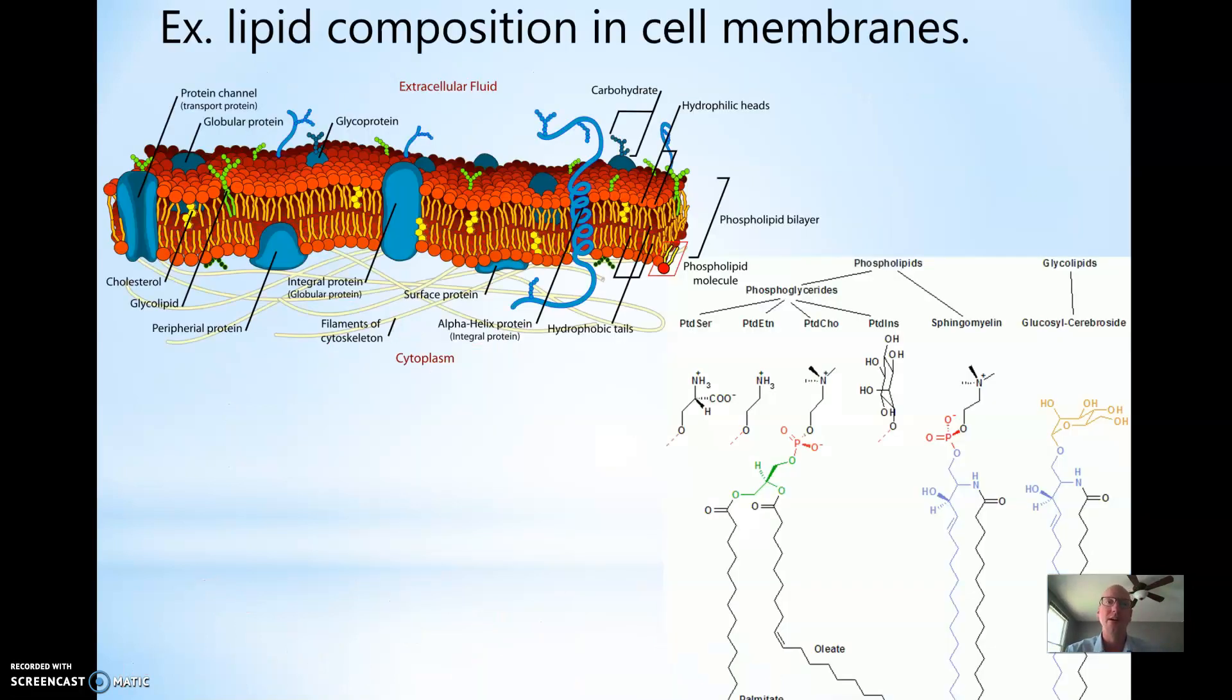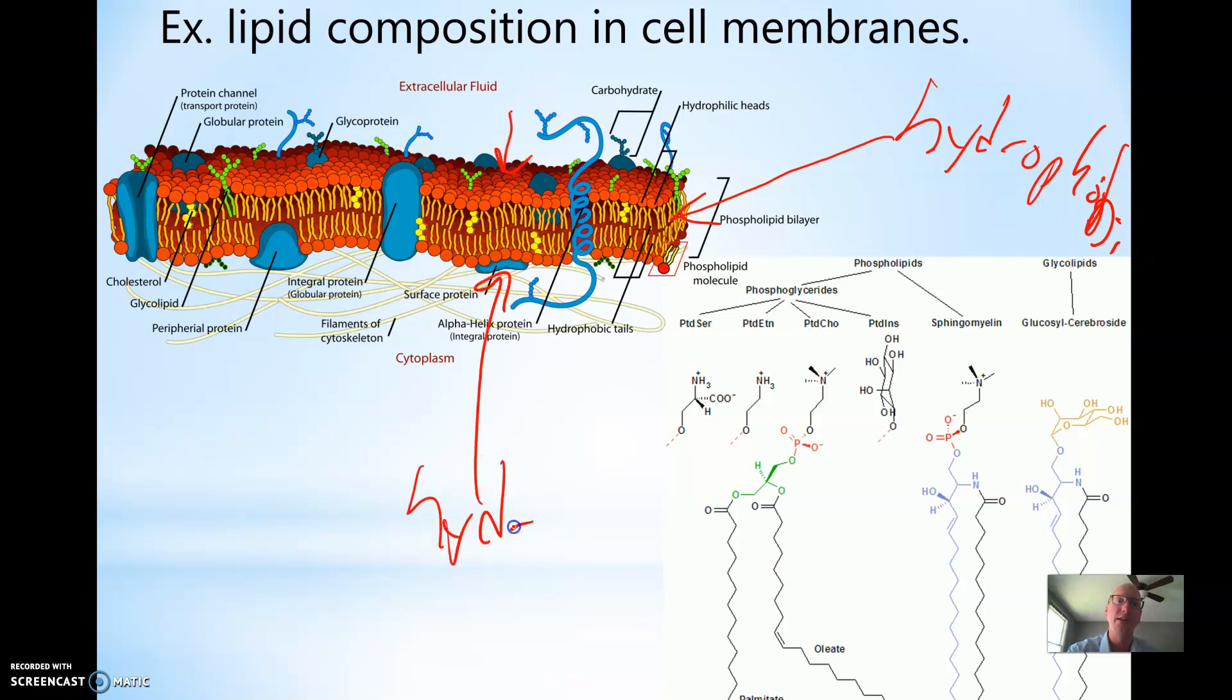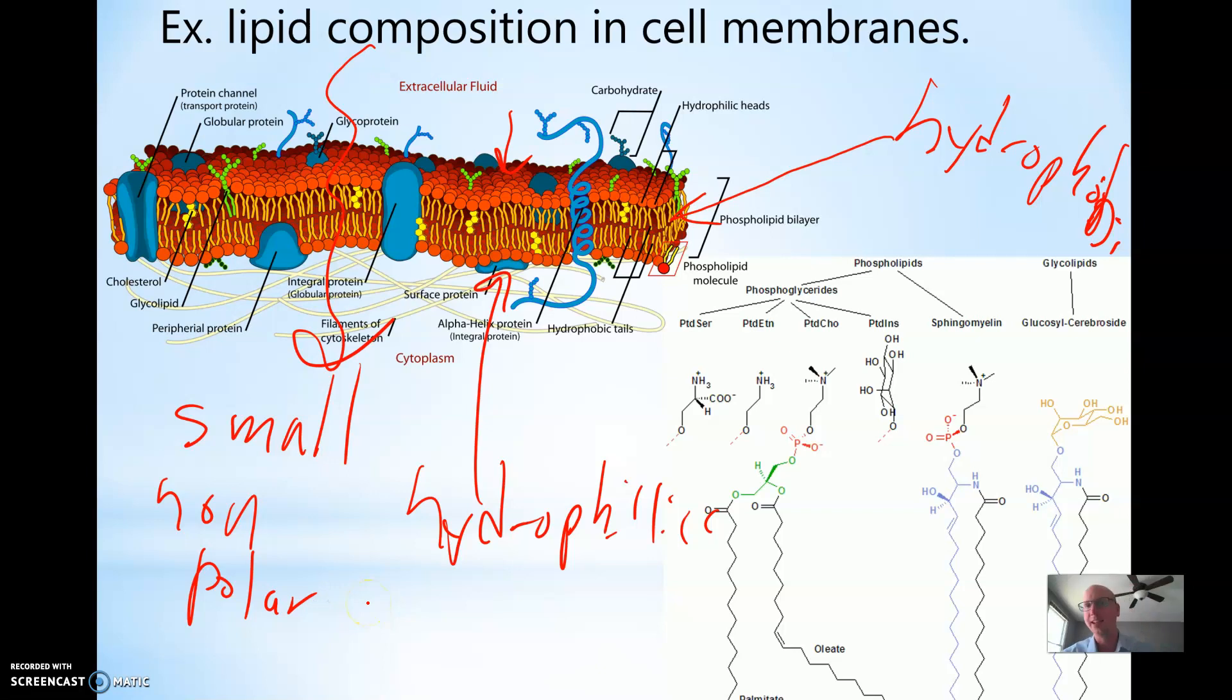This is showing you the fluid mosaic model of the cell membrane. The middle part is what we would say hydrophobic - water cannot get through. The heads of the phosphates are hydrophilic. The only thing that can actually pass through the cell membrane straight through are small non-polar molecules. Anything that's larger or anything that's polar cannot pass through that barrier.